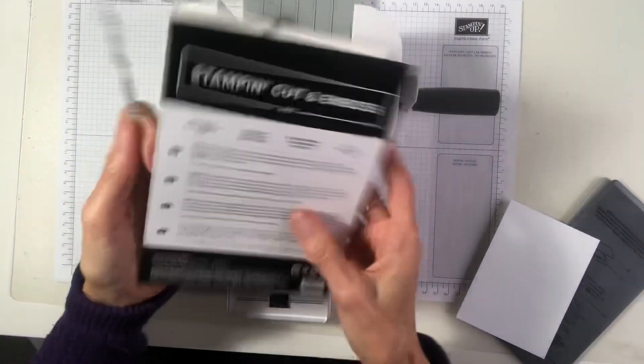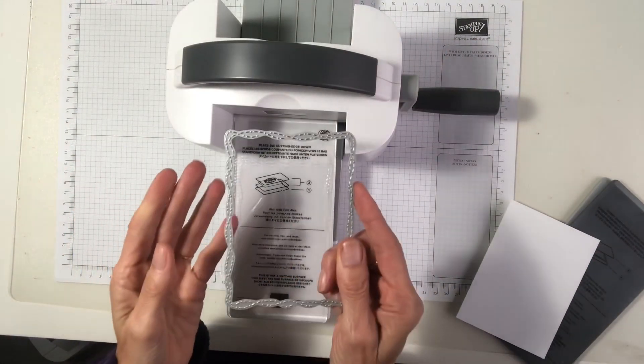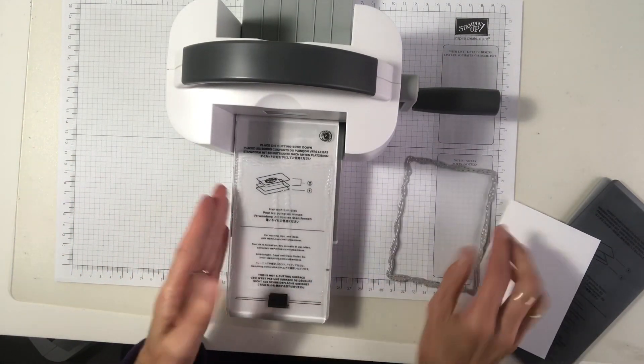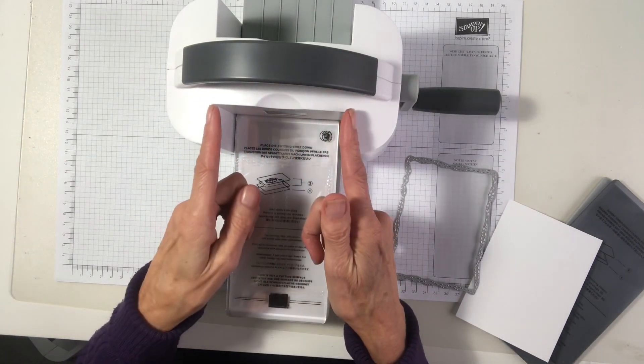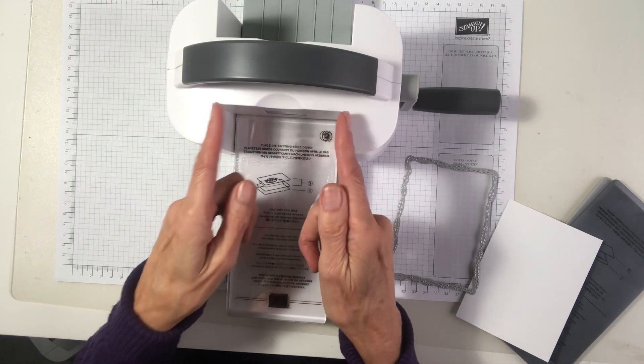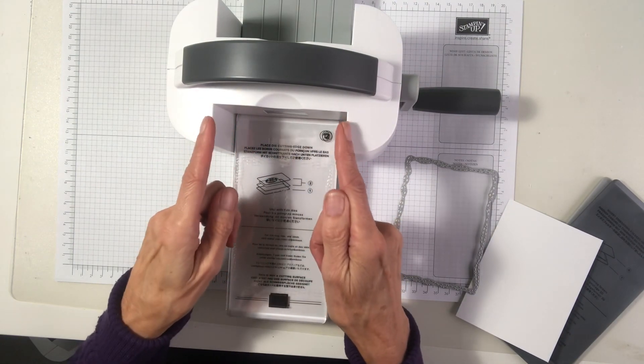These are just new coming out in the 21 occasions catalog. I love the little curvy edge. So when you're using the mini one, you can only cut with something that's as wide as this.